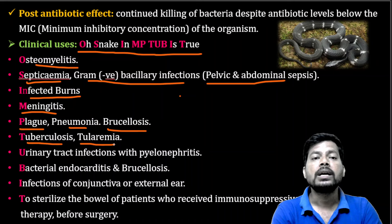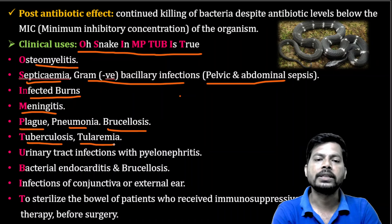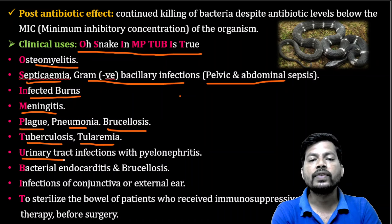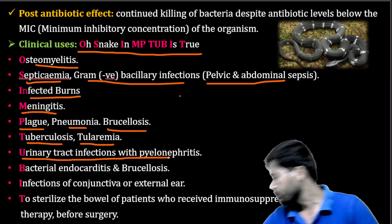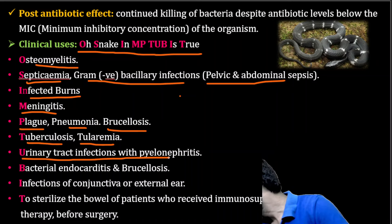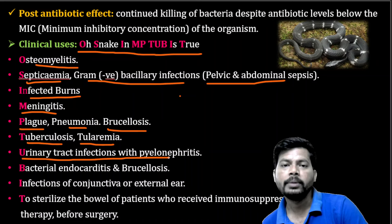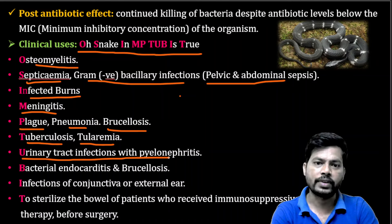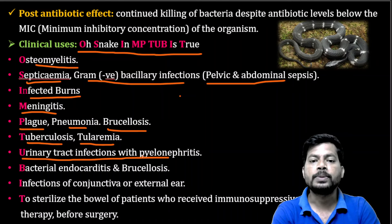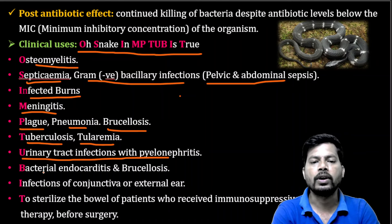Cattle disease means disease spread from animals to human beings. Aminoglycosides are also used in urinary tract infections with pyelonephritis — especially pyelonephritis, which is inflammation of the nephron.